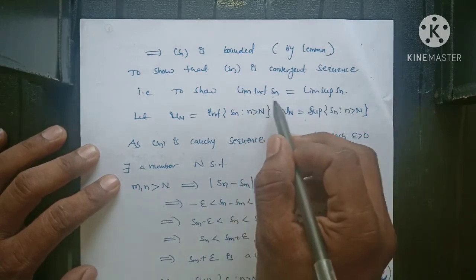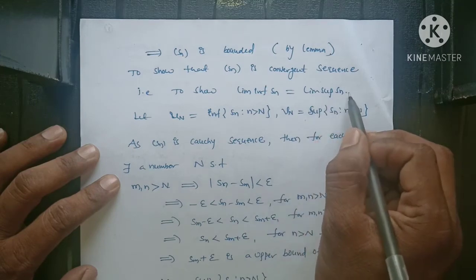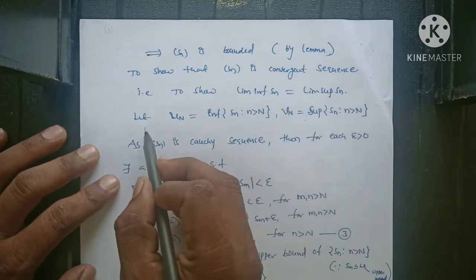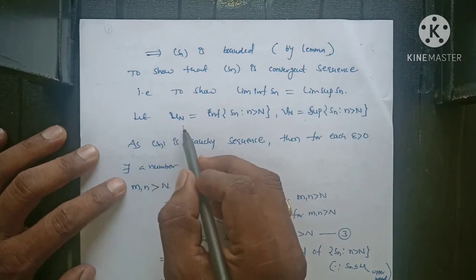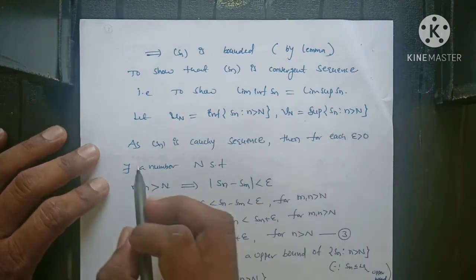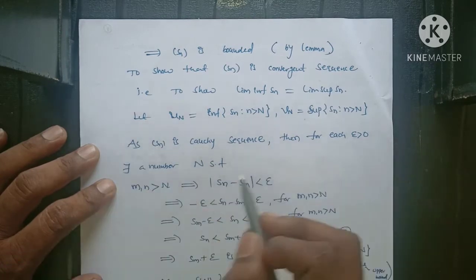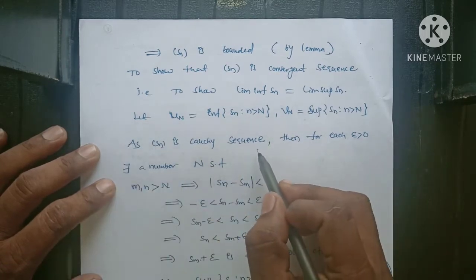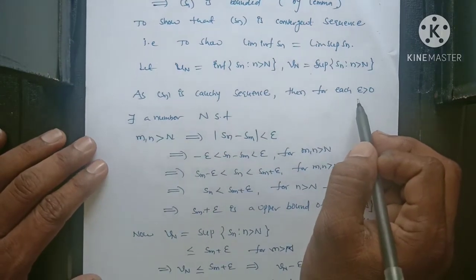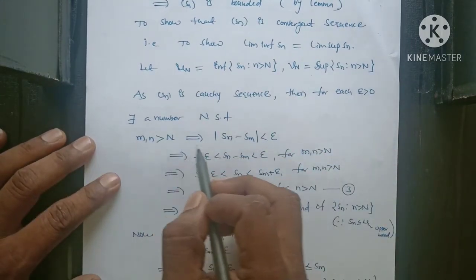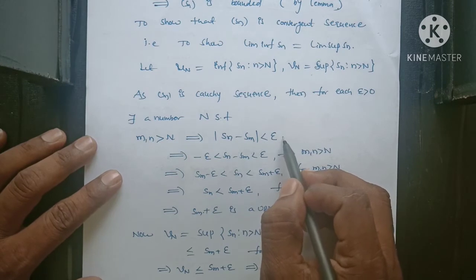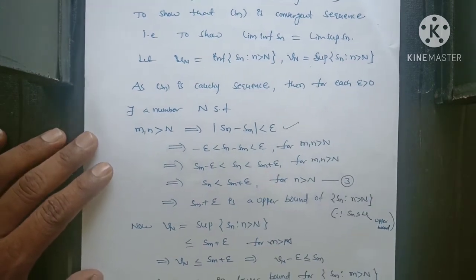For this, we are going to prove limit inferior of Sn is less than or equal to limit superior of Sn, and limit inferior of Sn is greater than or equal to limit superior of Sn. Let Un equal infimum and Vn equal supremum. As Sn is a Cauchy sequence, for each epsilon greater than 0, there exists a number capital N such that M, N greater than capital N implies mod(Sn minus Sm) less than epsilon. This is the basic definition of a Cauchy sequence.